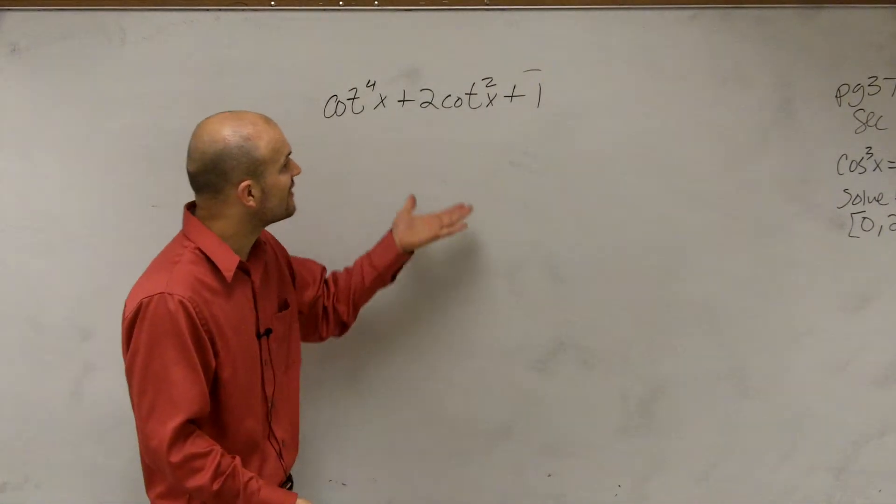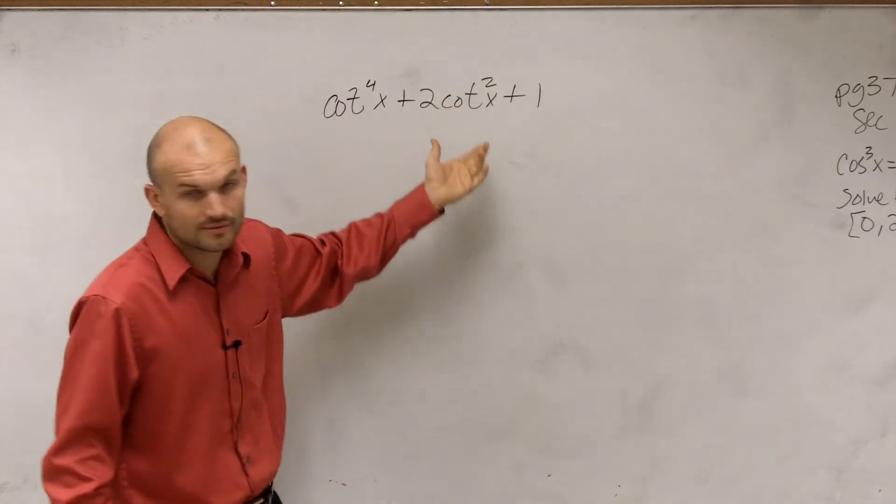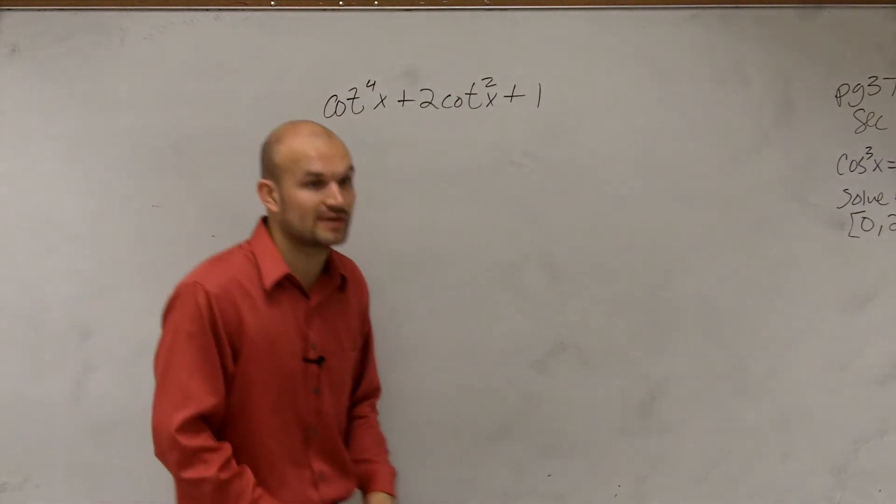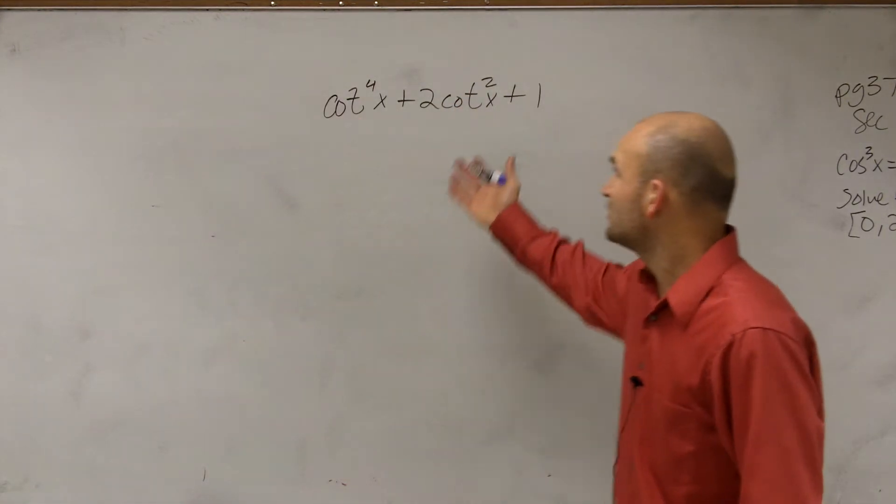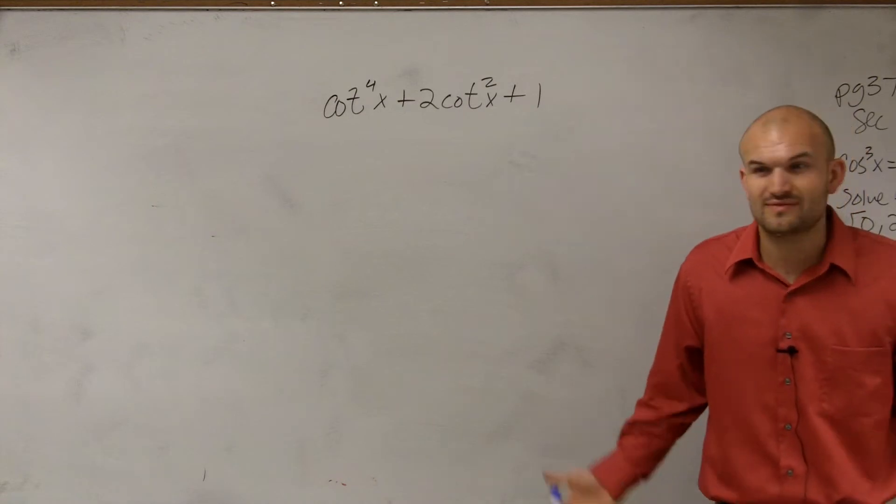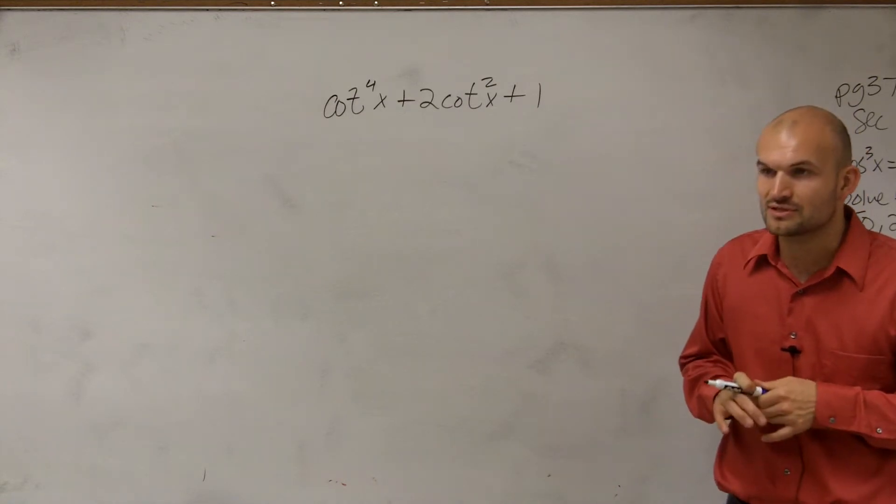When looking at simplifying this, we have a cotangent squared, which is going to be helpful because we know when we're dealing with the Pythagorean identities, we can transform that. But then we have a cotangent to the fourth, which we've never really done anything with cotangent to the fourth.